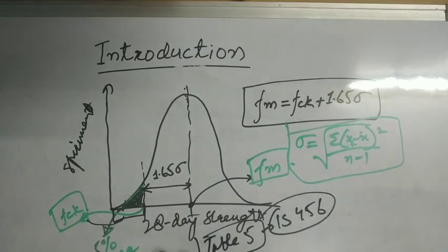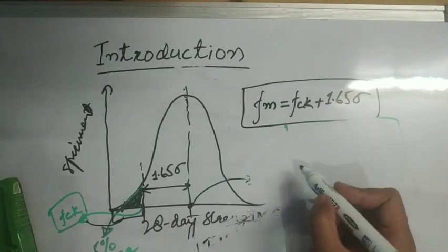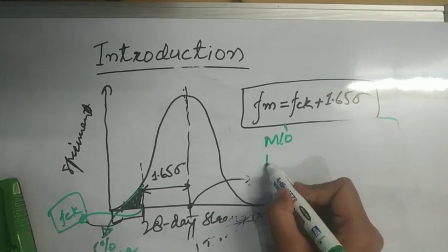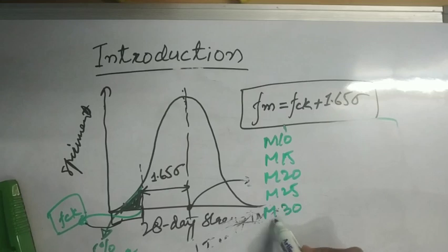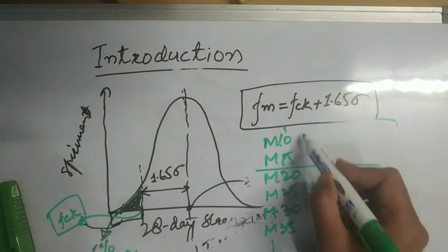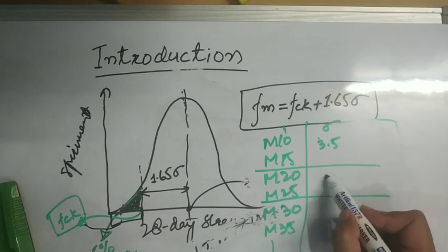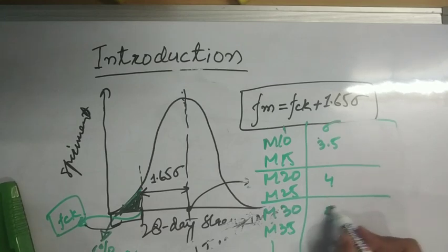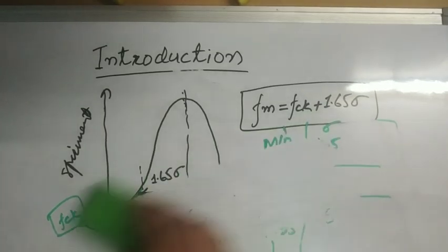The various values of this sigma can be: for M10 and M15, the value of this sigma is 3.5. For M20 and M25, the value of sigma is 4. And from M30 onwards, the value of sigma is 5. So these values of standard deviations are directly taken from IS code. So this was all about the characteristic strength and target mean strength.